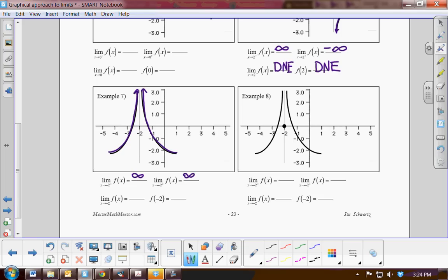So since I am approaching infinity from both the left and the right, the limit then at negative 2 would be infinity. Now is there a value at negative 2? No, that is a vertical asymptote. So the value does not exist.